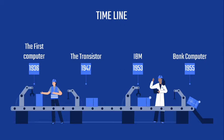In 1953, IBM — International Business Machines — came out with their first computer machine. In 1955, there is the invention of the bank computer.